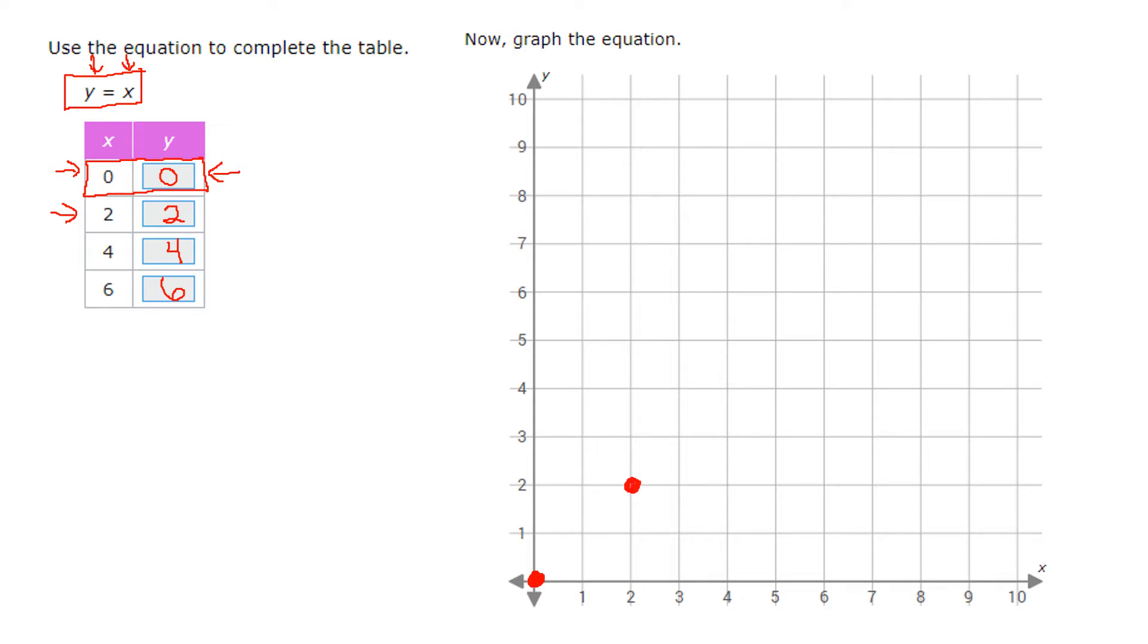And so from there, typically, the line will show up when you're completing this skill in IXL. But since we don't have that luxury right now, where x is 4, y is 4, and where x is 6, y is 6. And so the line is being created by all those points that are coming together to make a straight line. You'll know that you're correct because the line that was created in IXL will also include the other points that you might not have chosen to graph initially.